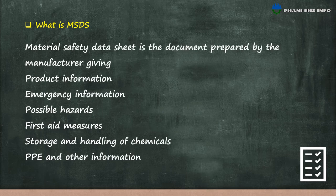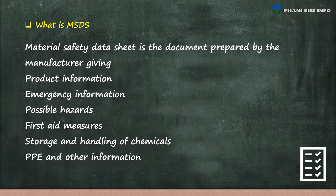What is MSDS? A Material Safety Data Sheet is a document prepared by the manufacturer giving product information, emergency information, possible hazards, first aid measures, storage and handling of chemicals, PPE and other information. It includes 16 sections.